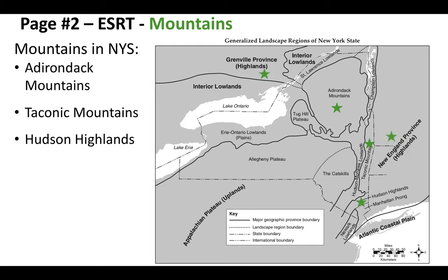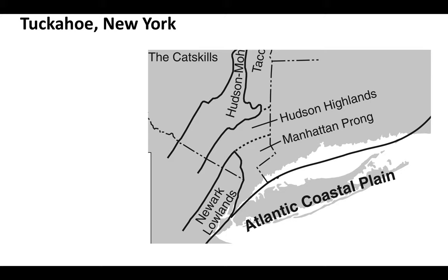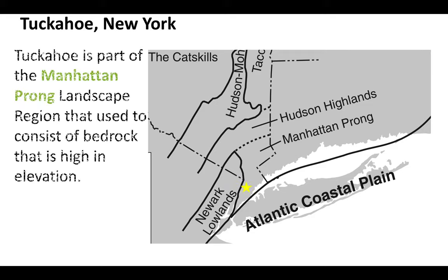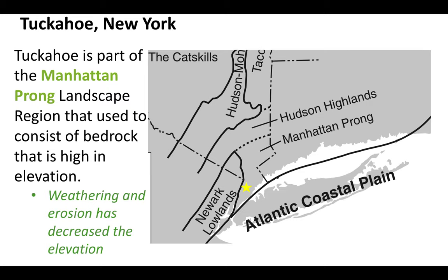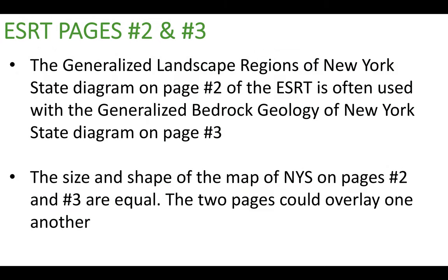On the reference table we also have the New England Province to the east, considered mountains with the term 'highlands.' Zooming into the reference table near our region in Tuckahoe, New York — marked by a yellow star — we are part of a landscape region called the Manhattan Prong. This region used to consist of high-elevation mountainous bedrock, but weathering, erosion by wind, water, and glacial activity have broken those mountains down over time, decreasing the elevation, which is why we don't see high elevations now.